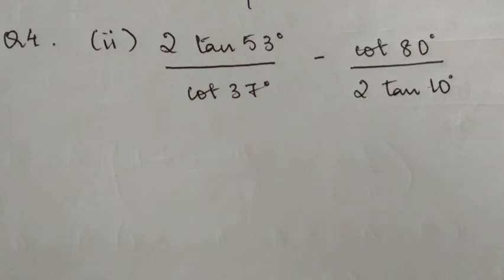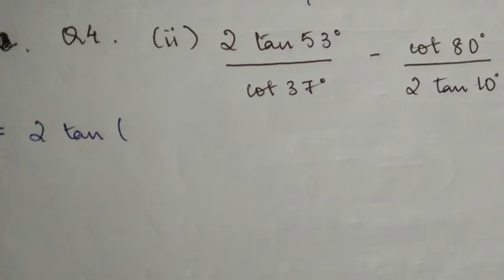So tan and cot are complementary functions. So tan and cot, when the angles add up to 90°, you can convert them. Similarly, 80° and 10°, if you add them together you get 90°, so they are also complementary. Now, tan 53° can be written as 90° minus 37°.